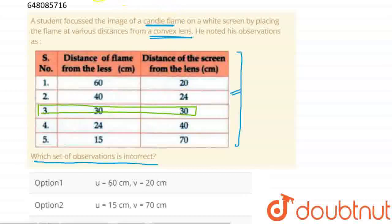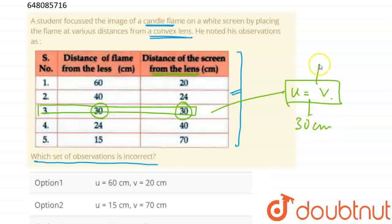If we look at the object distance and the image distance, which is 30 cm. So if we look at the object distance, the object distance is at the center of curvature.